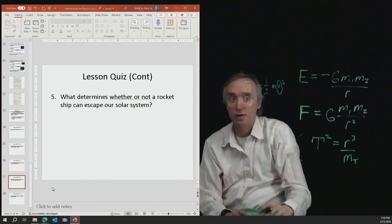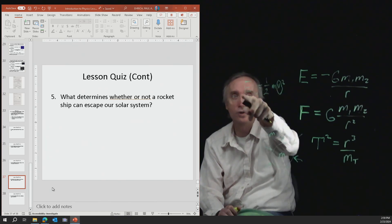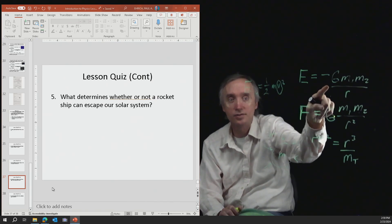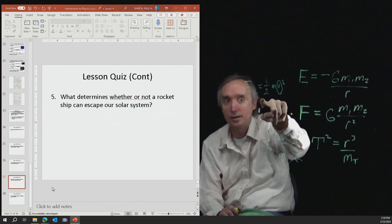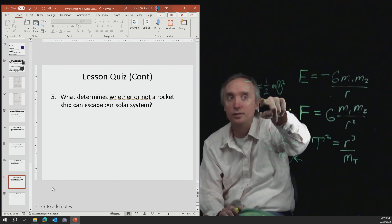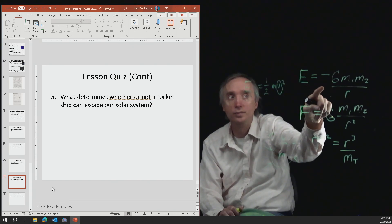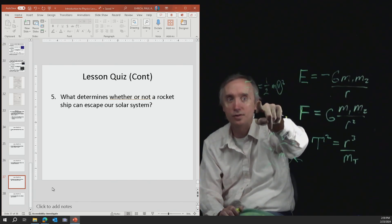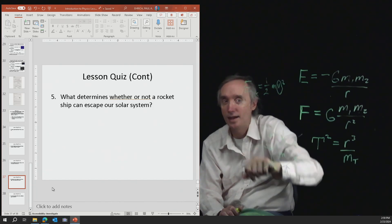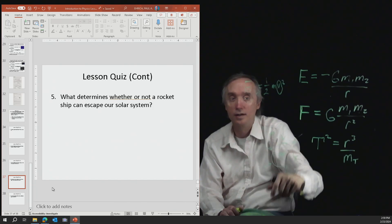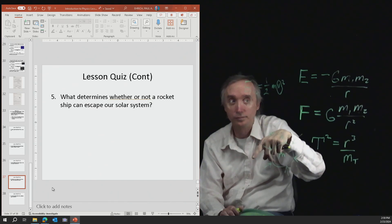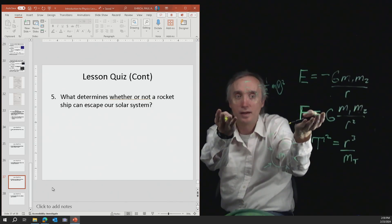So if this term is winning, meaning this term is bigger than this term, then it escapes. And so if this term is bigger than this term, then it can't escape. And it has an elliptical orbit.